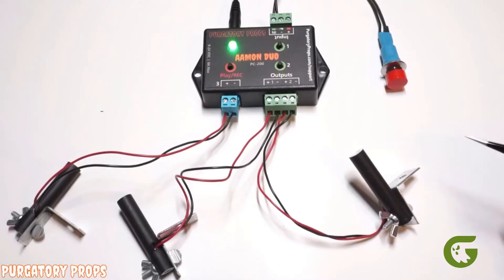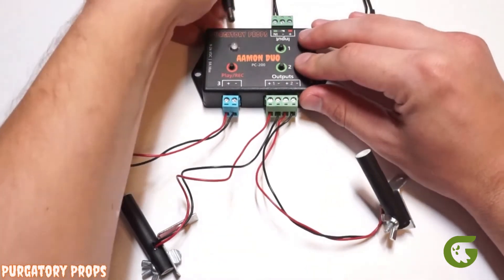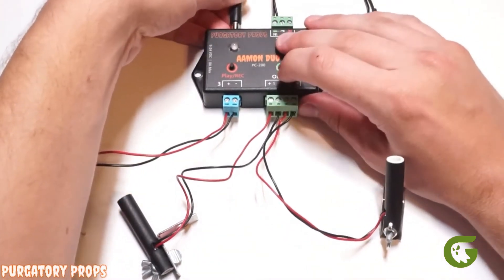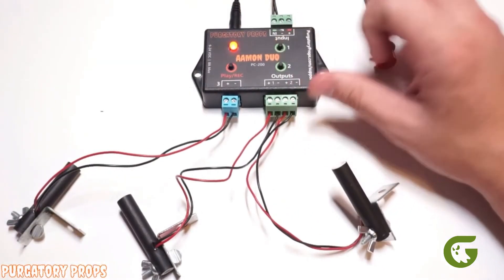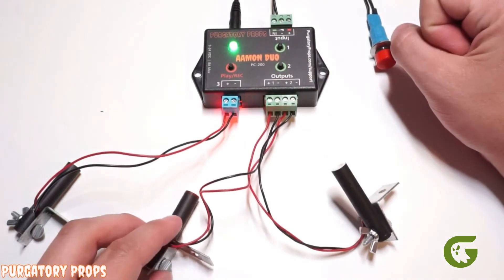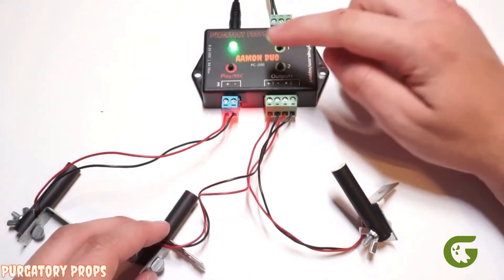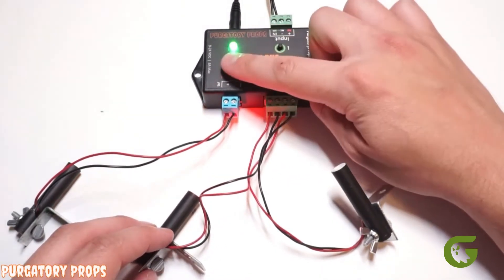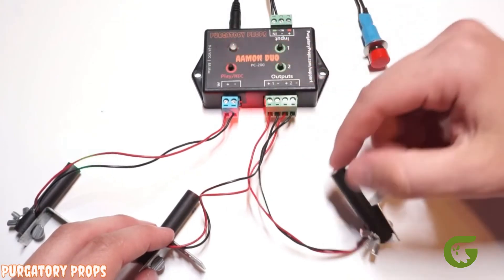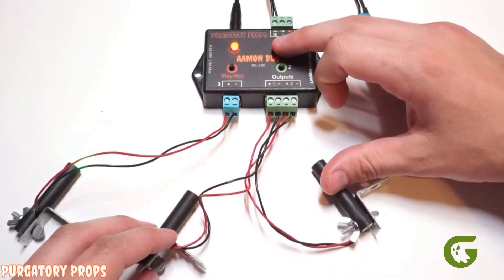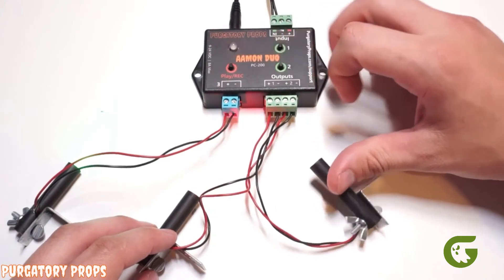There are other things you can configure by holding buttons when the controller is turned on. So if we hold button one and turn back on the controller, release when the light turns red, we'll see output one turns on. So now output one is in inverted mode. So when we record, you'll see output one stays on, and then when we push the button, it turns off.